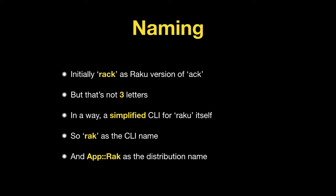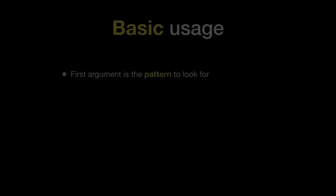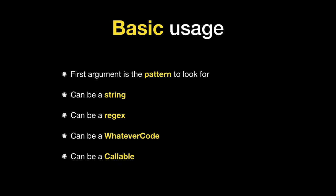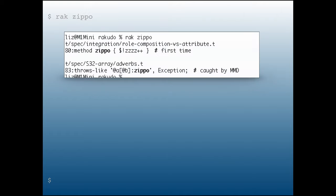So, how do you use RAK? The basic use is simple: the first argument is the pattern to look for. The pattern can be a string, a regex, a whatever-code, or a callable. For example, you say 'rak ZIPPO' and in the RAKUDO repository you get results: two occurrences of ZIPPO in the repository — actually in the test repository called roast, which is a subdirectory of RAKUDO after a spec test.